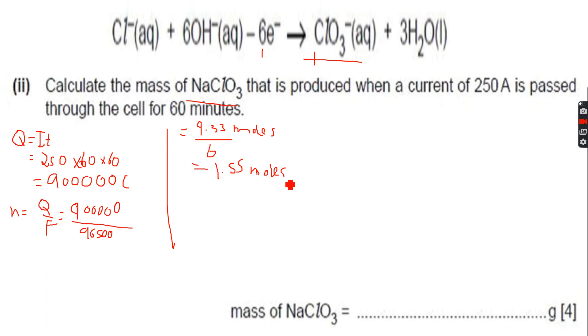After that we'll calculate the mass of NaClO3. This will be N times the relative formula mass, which will be 23 plus 35.5 because of chlorine, plus 16 into 3 because of three oxygen atoms. So the mass of sodium plus the mass of chlorine plus three times the mass of oxygen.